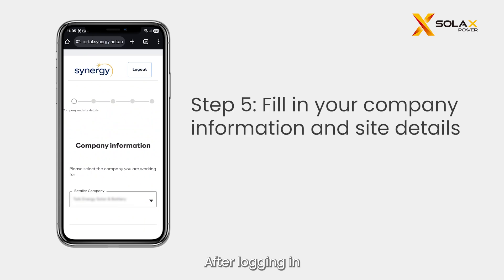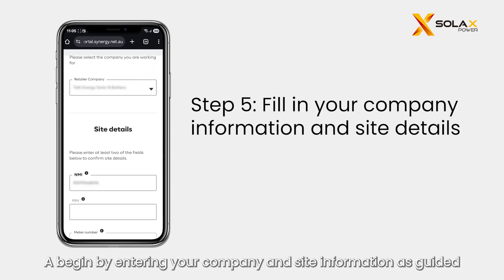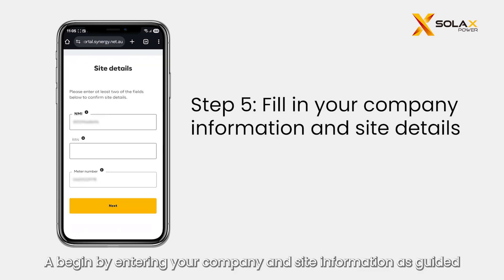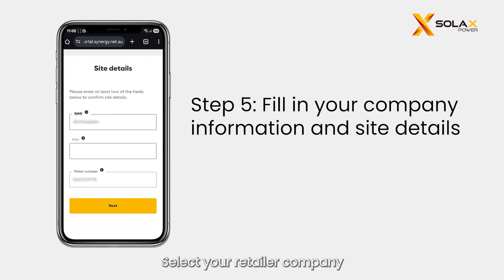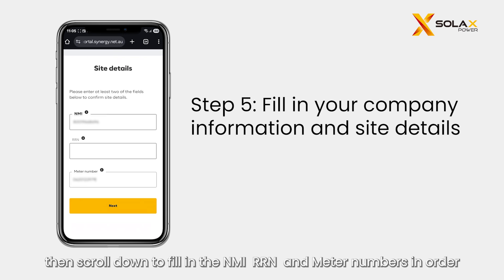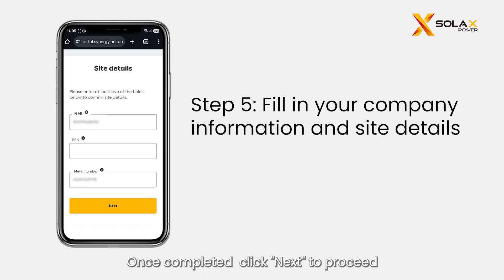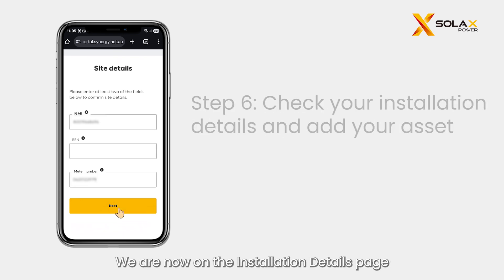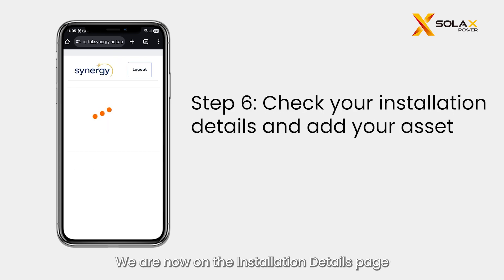After logging in, begin by entering your company and site information as guided. Select your retailer company, then scroll down to fill in the NMI, RRN, and meter numbers in order. Once completed, click Next to proceed.